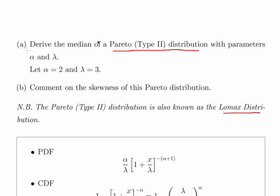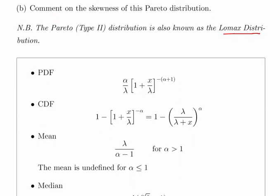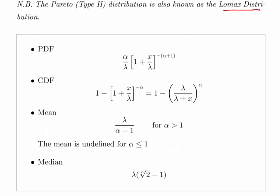Anyway, derive the median of a Pareto Type II distribution with parameters alpha and lambda, and then let alpha equal to 2 and lambda equal to 3. Comment on the skewness of this distribution. Essentially what we're going to do there is compute the mean and the median for alpha equal to 2 and lambda equal to 3.